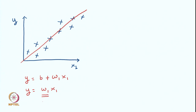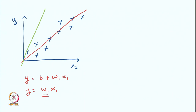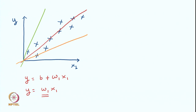Our job is to estimate the value of w1. If we use a different value of w1 it will result in a different line. Here we have a line which passes through the origin with some slope. If I change the value of the slope I can draw some other line from the origin. Just by changing the value of w1 we can get different models or different functions. Which of these functions is the most appropriate for our cause is the central question in front of us.